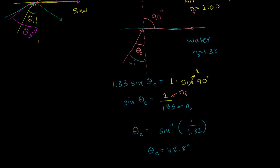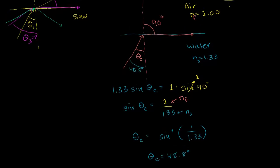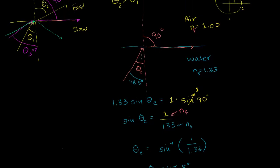This tells us that if we have light leaving water at an incident angle of more than 48.8 degrees, it actually won't be able to refract — it won't escape into the air, it'll just reflect at that boundary. If you have angles less than 48.8 degrees, the light will refract and escape. And right at 48.8 degrees — the critical angle — you'll have a refraction angle of 90 degrees, meaning the light just travels along the surface of the water.